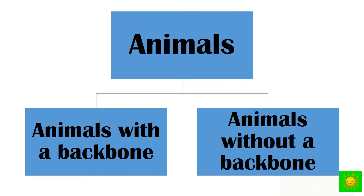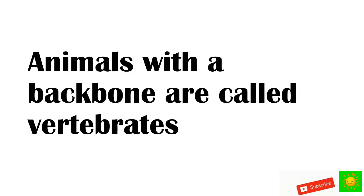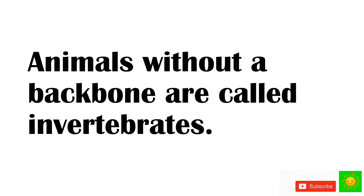Animals can be divided into two groups: animals with a backbone and animals without a backbone. Animals with a backbone are called vertebrates. Animals without a backbone are called invertebrates.